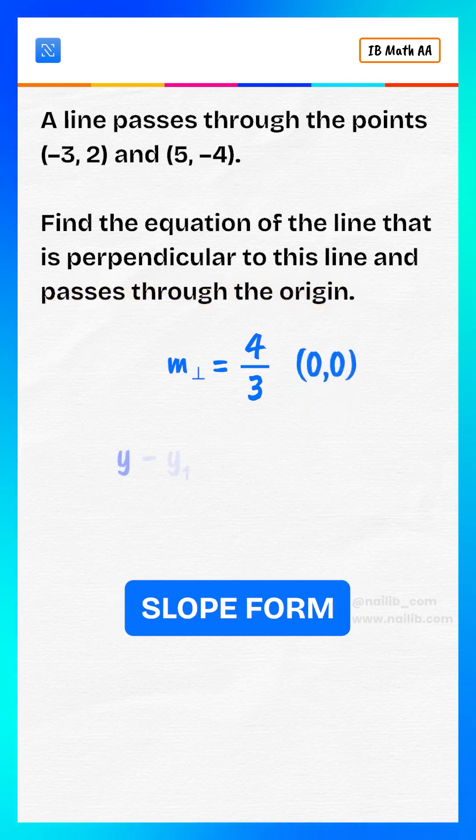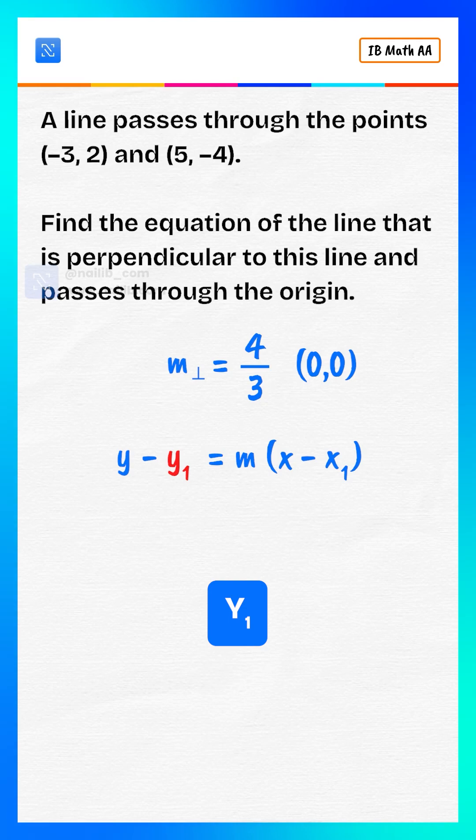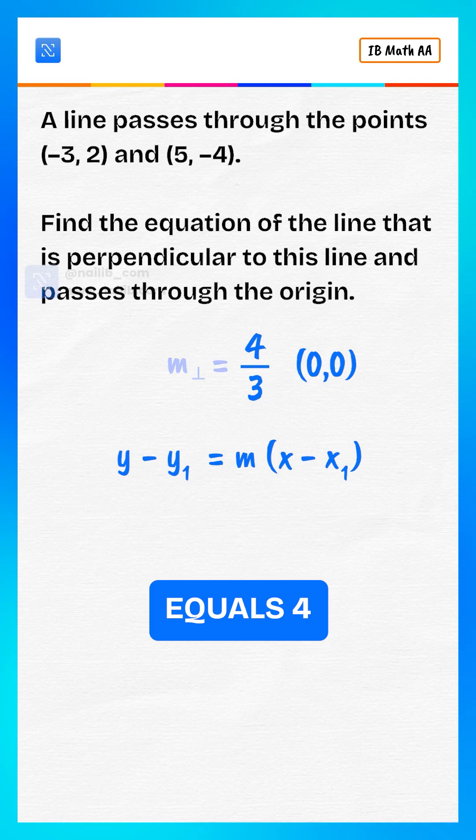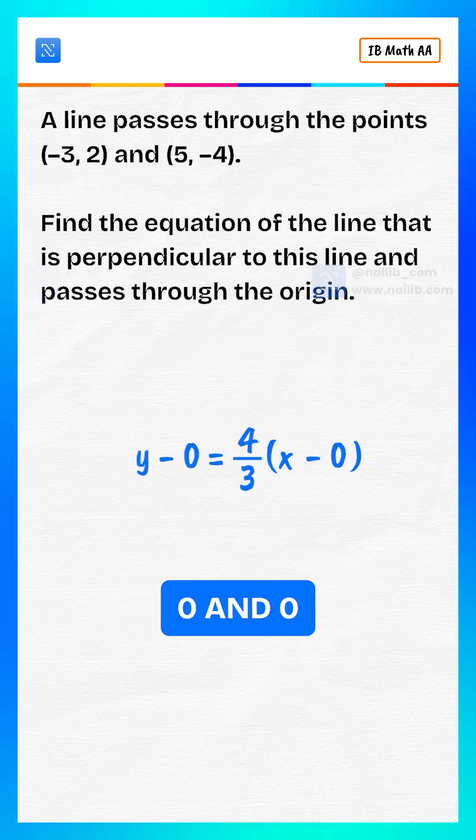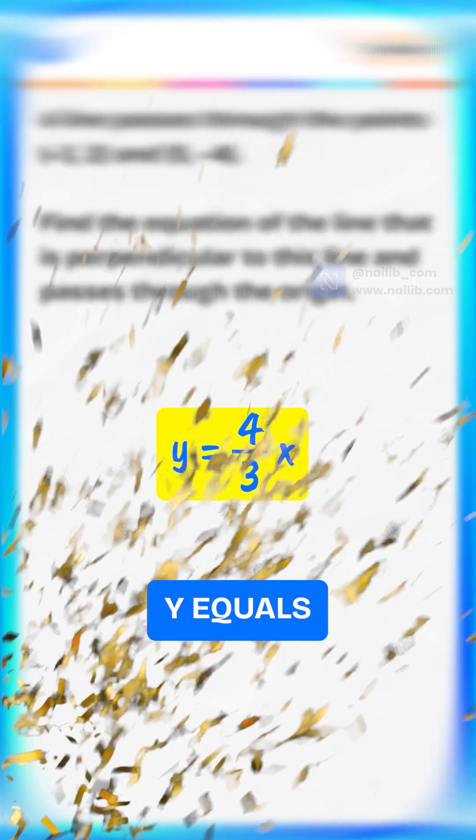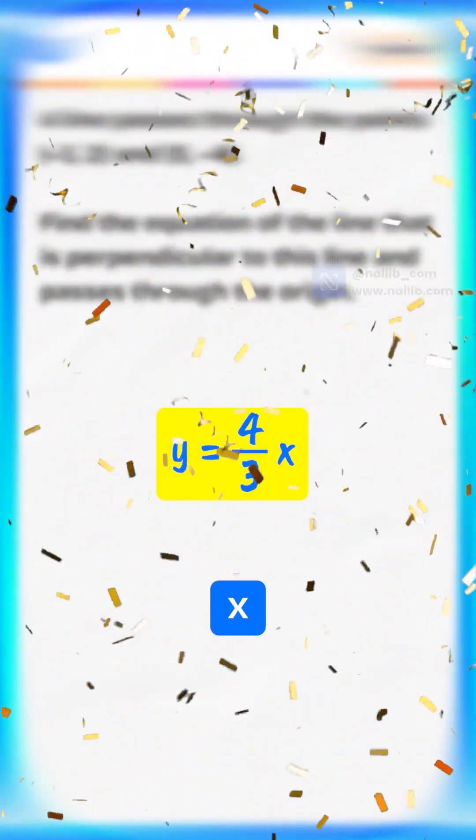Use the point slope form y minus y1 equals m times x minus x1. Substitute m equals 4 divided by 3 and the point 0 and 0. That gives y equals 4 divided by 3 times x.